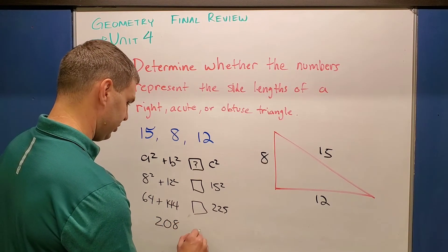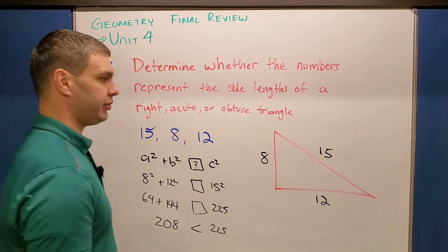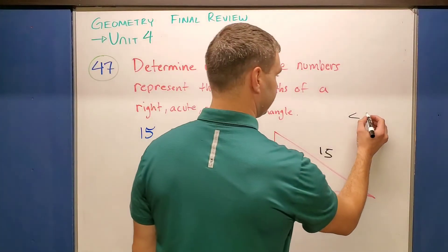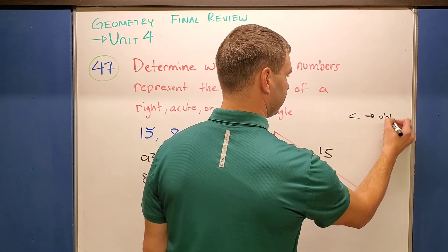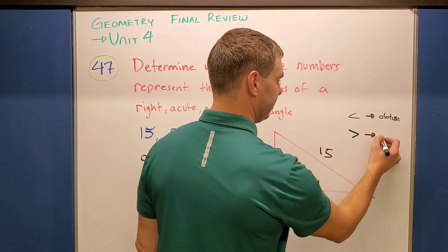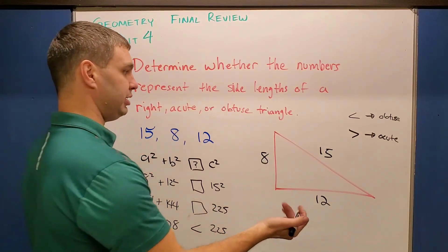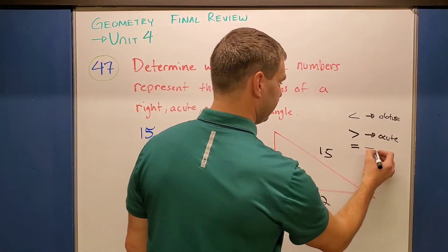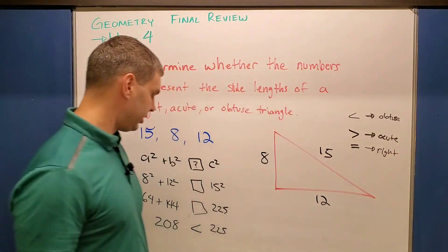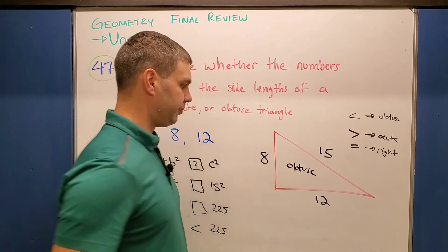So 208 is what compared to 225? Well, it's obviously less than. Now, one thing that you have to remember with the Pythagorean theorem converse is that if you end up with a less than, your a² + b², if it's less than your c², that is going to imply an obtuse triangle. If you would get a greater than, that's going to imply an acute triangle. And of course the Pythagorean theorem itself, a² + b² = c², that is of course is going to be a right triangle. So this one is less than, therefore this is an obtuse triangle for this problem.